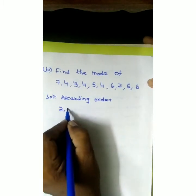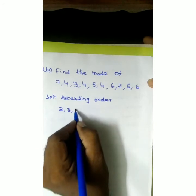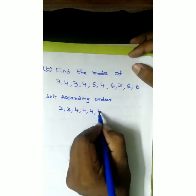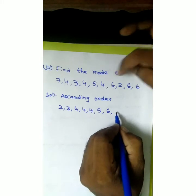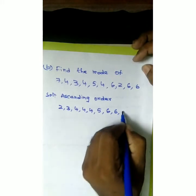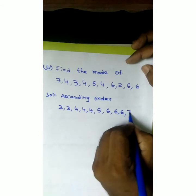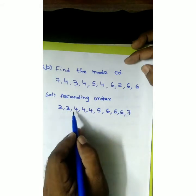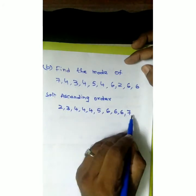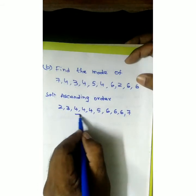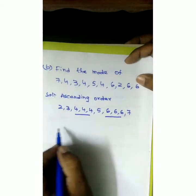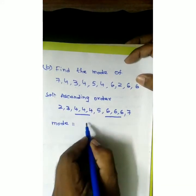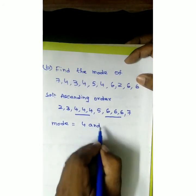Suppose 2 is the least value, then 3. Then 4 appears 3 times. Then 5, 6, 7 each appear. Counting all 10 observations, we find that 4 and 6 are both repeated an equal number of times. So there are two modes for this data, that is 4 and 6.